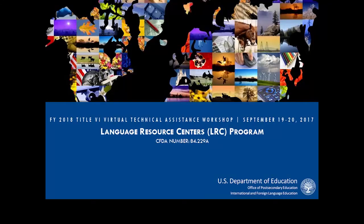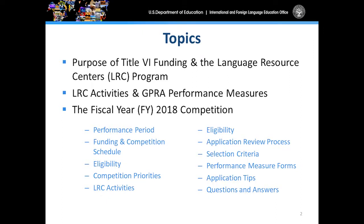Let's get started. Today we're going to be discussing the purpose of the Title VI Funding and Language Resource Program, the different activities related to that program, what we call the GIPRA Performance Measures, and the upcoming fiscal year 2018 competition — including the potential notice inviting applications to apply for these programs.